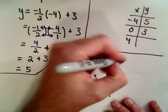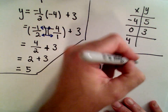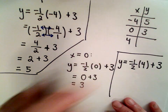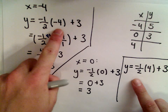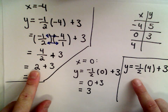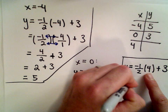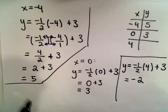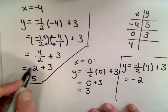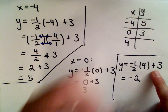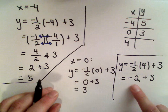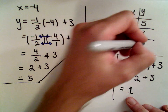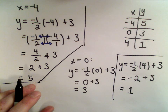Last but not least, suppose we use x equals positive 4. We would have negative 1 half multiplied by 4 plus 3. We saw that negative 1 half multiplied by negative 4 gave us positive 2, so negative 1 half multiplied by positive 4 gives us negative 2. The only change is you have a negative times a positive, which gives a negative. So we've got negative 2 plus 3, which leaves us with positive 1.